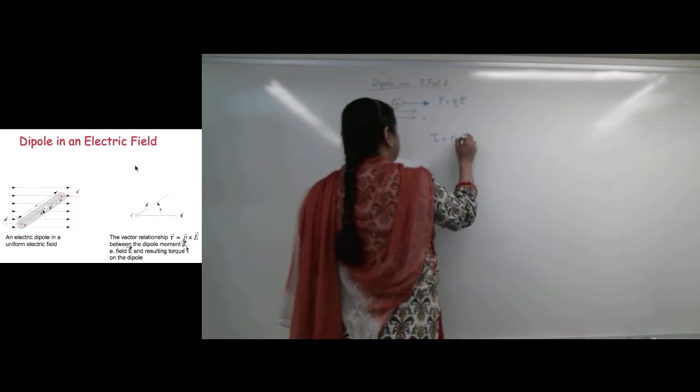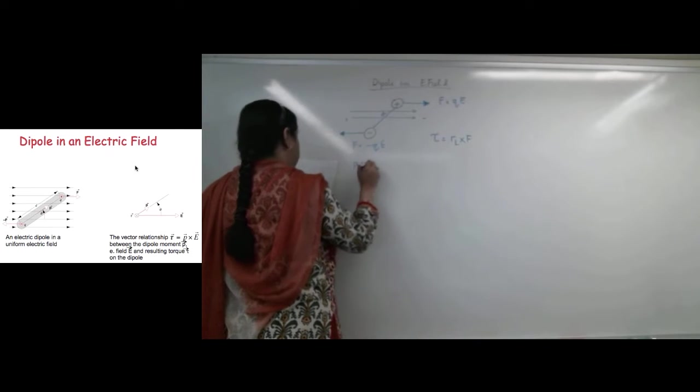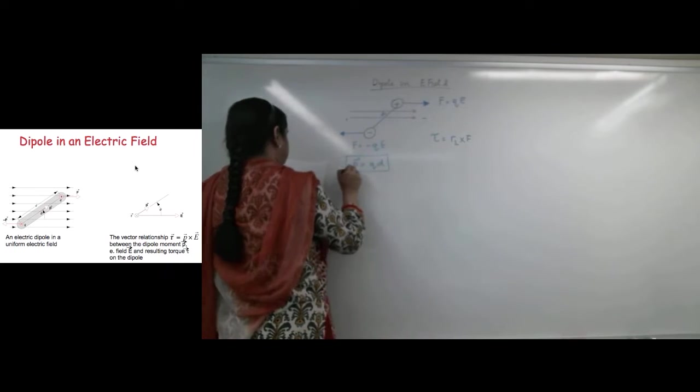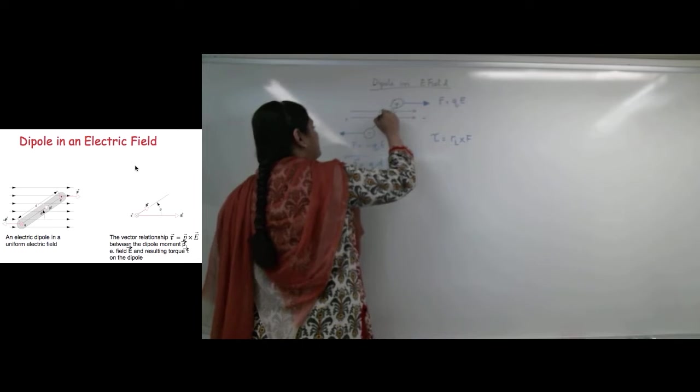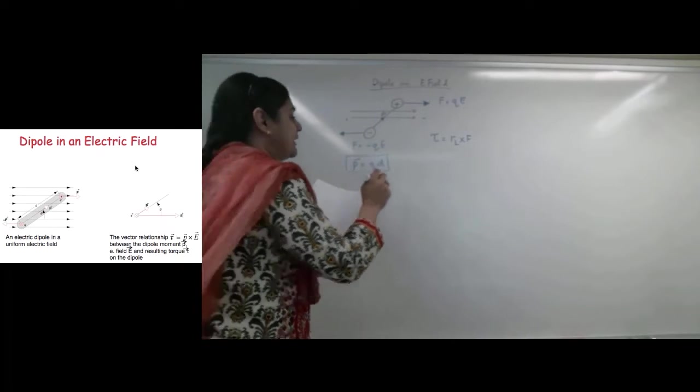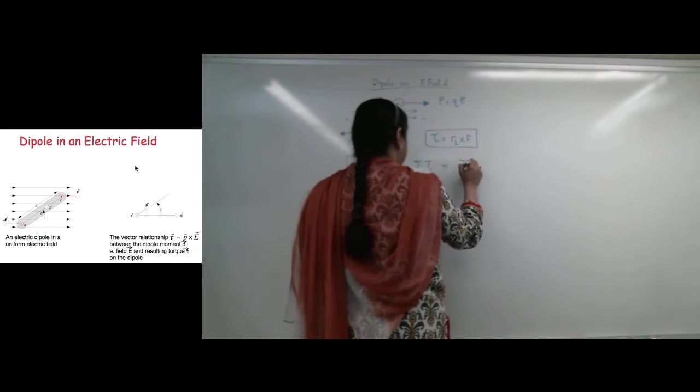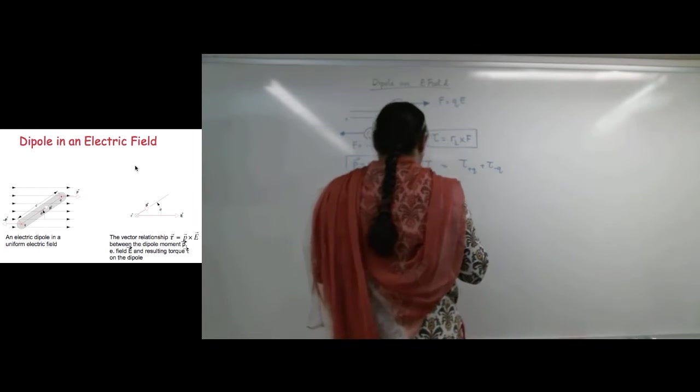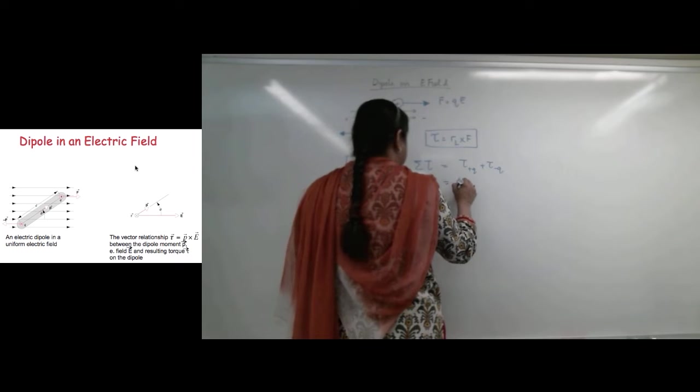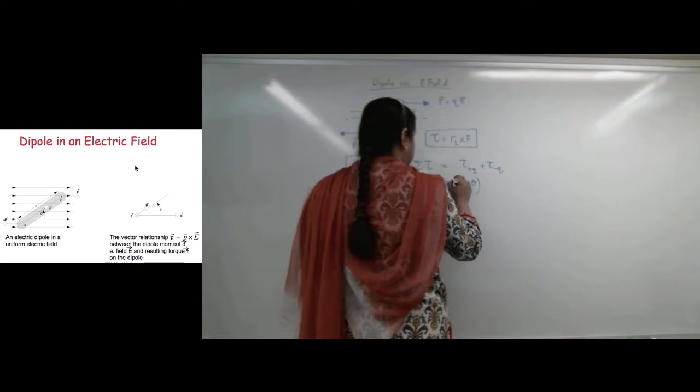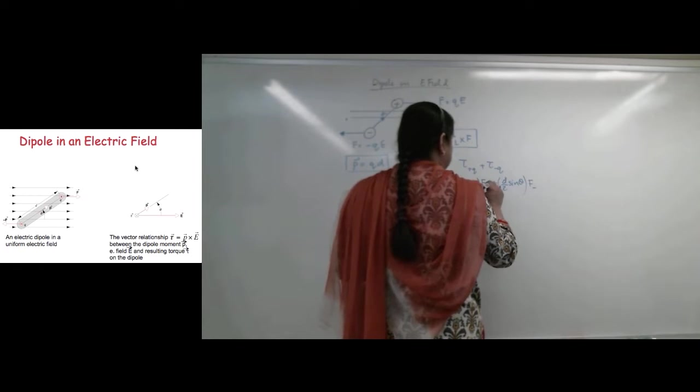We know torque is equal to R perpendicular times F. So because of this dipole moment, we also know that the dipole moment is equal to QD. We know that it points from the negative charge to the positive charge. So my dipole moment is going to be from here to here. So net torque that my system is going to experience will be sigma F, or net torque will be torque due to the plus and the torque due to the minus charge. This means it is going to be D over 2 sine theta times F plus D over 2 sine theta times F minus and F plus.